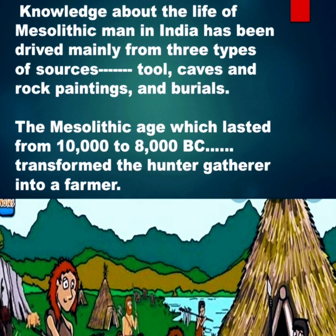Knowledge about the life of Mesolithic man in India has been derived mainly from three types of sources: tools, caves and rock paintings, and burials. The Mesolithic age, which lasted from 10,000 to 8,000 BC, transformed the hunter-gatherer into a farmer.